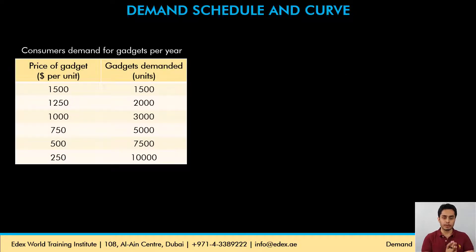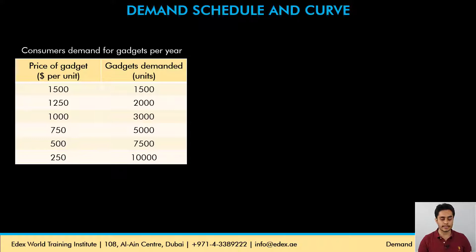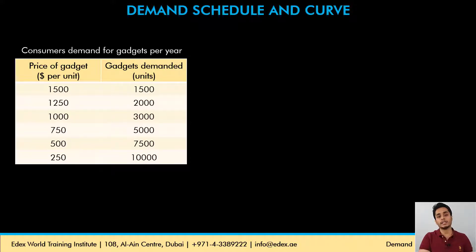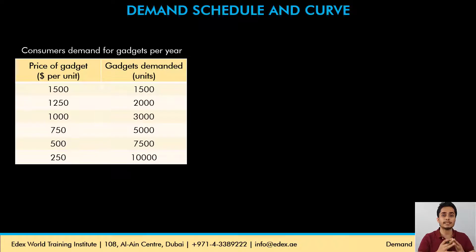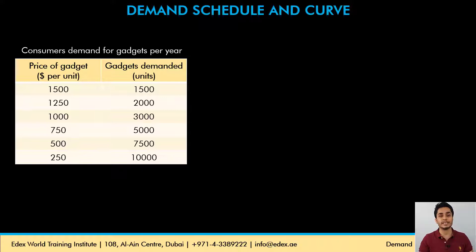Here we have a demand schedule with prices on the left side and gadgets demanded per year at different prices on the right side. If you talk about the entire demand schedule, this is the demand of the consumer. But if you talk about just one price point — for example, at a price of $1500, the quantity demanded is 1500 — that is quantity demanded. If you talk about the various price levels and the relative quantities, that is the consumer's demand for gadgets per year.